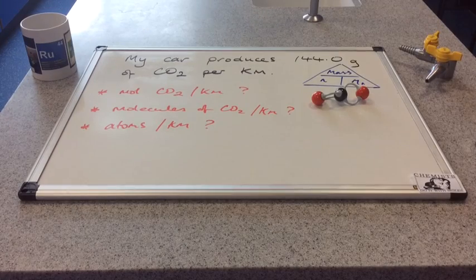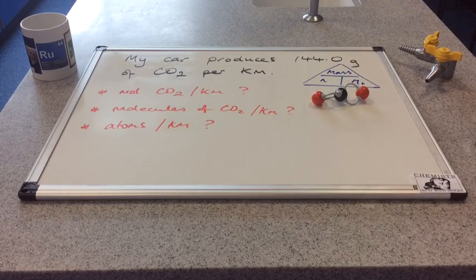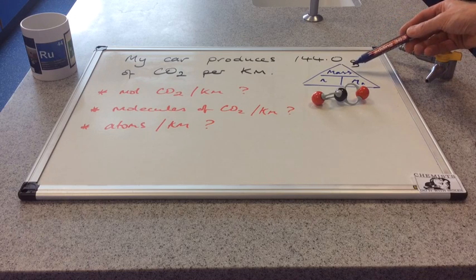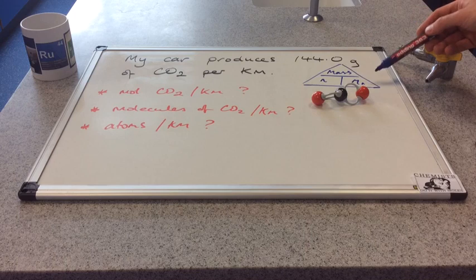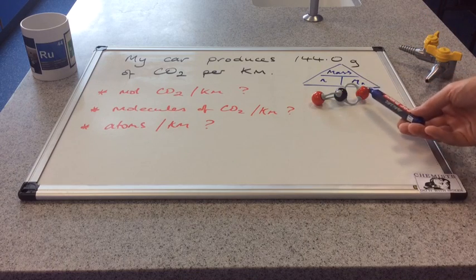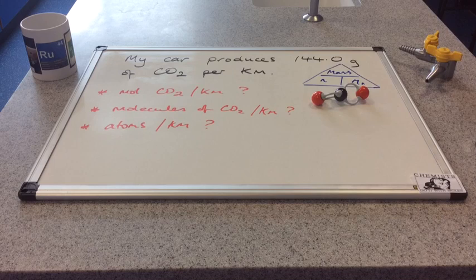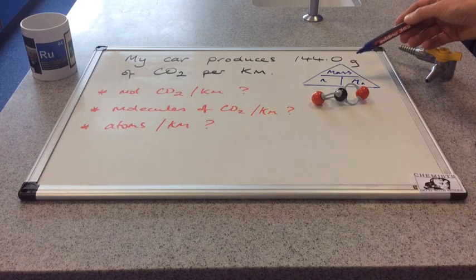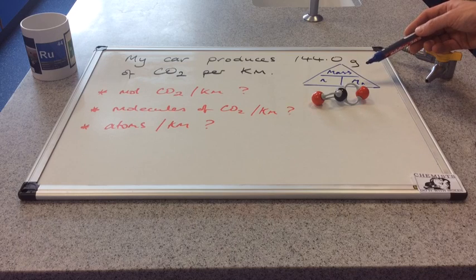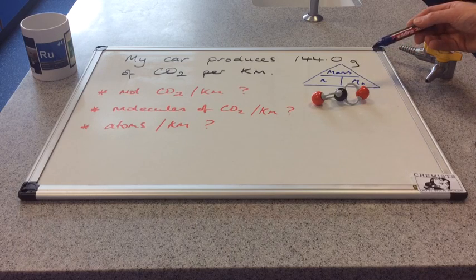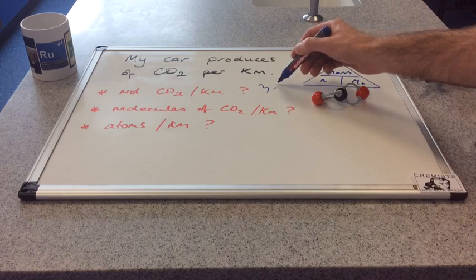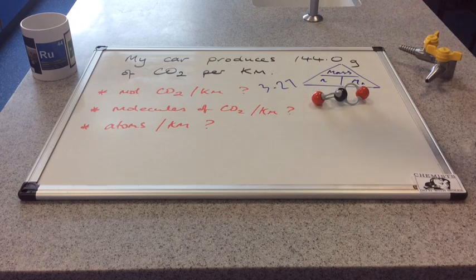So the first one, the moles of carbon dioxide, well we know that the car makes 144 grams every kilometer, so that's the mass. The MR of CO2 is 12 plus 16 plus 16 is 44. So it's 144 divided by 44 and that comes out at 3.2727 and so on. So we'll say 3.27. We'll just do three significant figures. 3.27 moles.